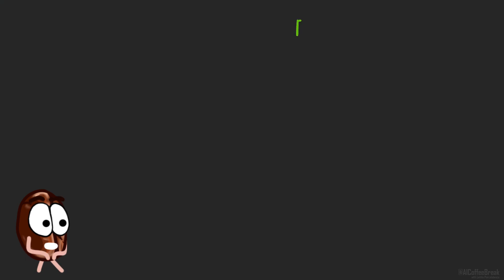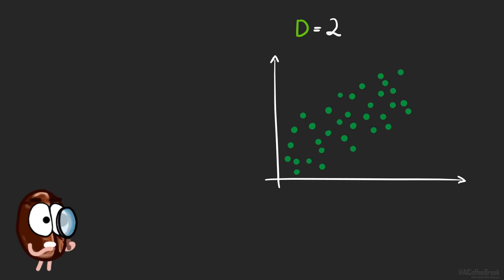If the data would be two-dimensional, we could even visualize it easily like this. Looking at the data, clearly there are more important dimensions than others. In this direction, the spread is not that big.